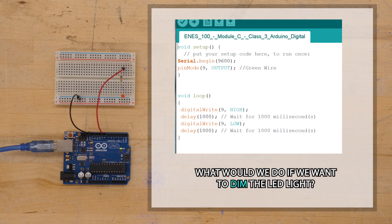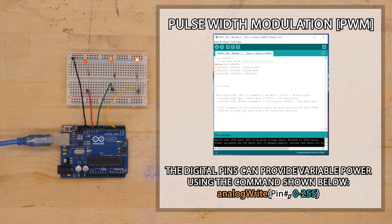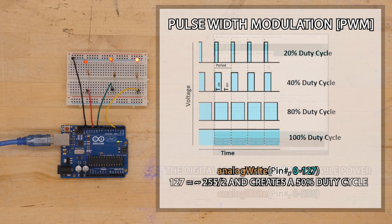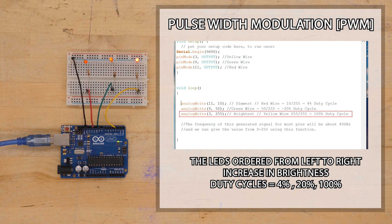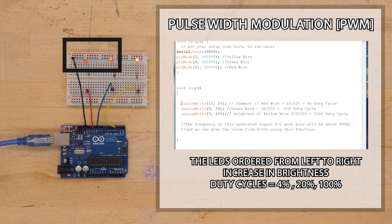But what if we wanted to dim the LED rather than have it be on or off? This is where pulse width modulation, or PWM, comes in. Although the Arduino cannot technically provide voltages between 0 and 5 volts, PWM allows you to mimic lower voltage outputs by turning the digital pin on and off at a certain frequency using the analogWrite command. The analogWrite function accepts values from 0 to 255 to create a duty cycle. For example, a value of 127 — approximately 255 divided by 2 — creates a 50% duty cycle and mimics a voltage output of 2.5 volts.